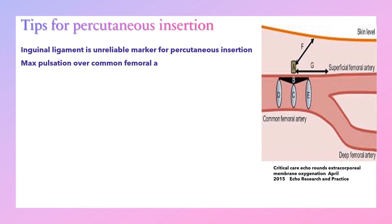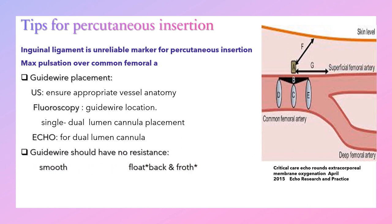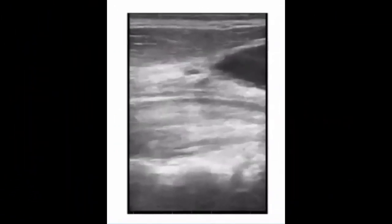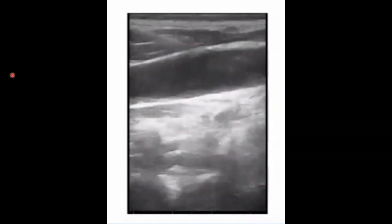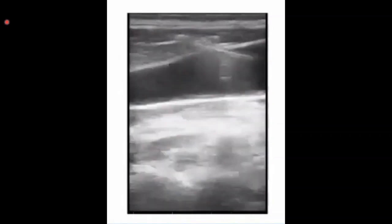Tips for percutaneous insertion: the inguinal ligament is an unreliable landmark. Use maximum pulsation to locate the femoral artery. Ultrasound is important to ensure proper visible anatomy. Fluoroscopy can be used in single-end and dual-lumen cannula placement to confirm guide wire location. Transesophageal echo can be used for dual-lumen cannulas. The guide wire should have no resistance — it should be smoothly inserted, float easily, and move back and forth freely. Each step should involve dilatation using a rotational movement more than a forward movement.